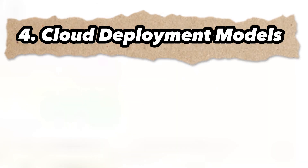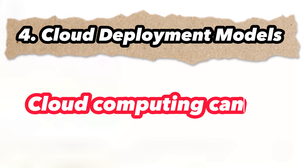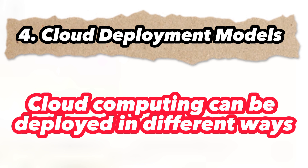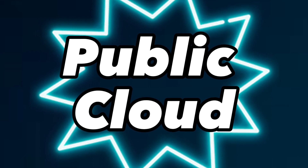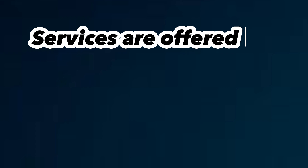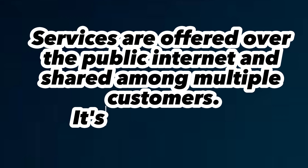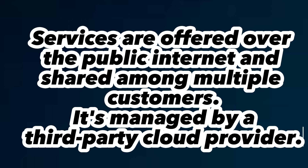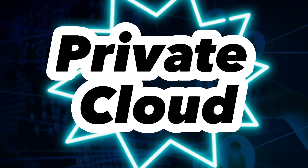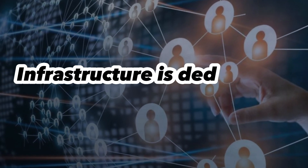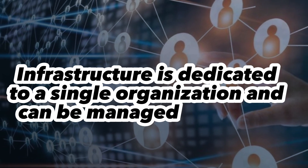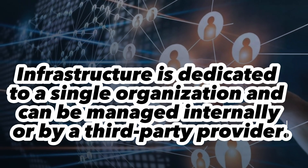Cloud deployment models: Cloud computing can be deployed in different ways. Public cloud — services are offered over the public internet and shared among multiple customers; it's managed by a third-party cloud provider. Private cloud — infrastructure is dedicated to a single organization and can be managed internally or by a third-party provider.